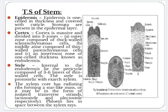Stele: internal to the endodermis lies the pericycle composed of three to six layers of thin-walled cells. The stele is in a protostelic condition with exarch xylem. The xylem core has radiating ribs forming a star-like mass, or it may be in the form of isolated transverse strands like actinostele and plectostele. Phloem lies in the spaces between the xylem rays.